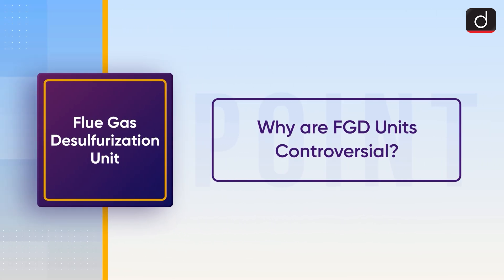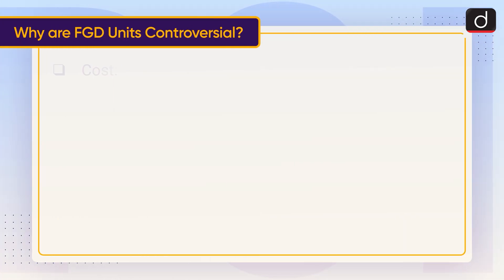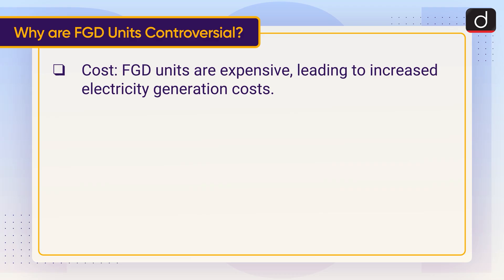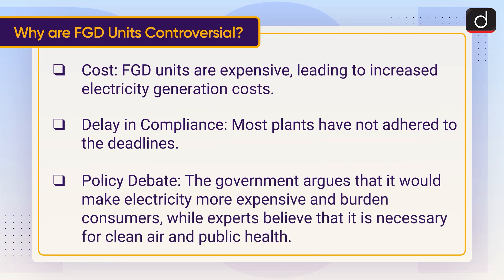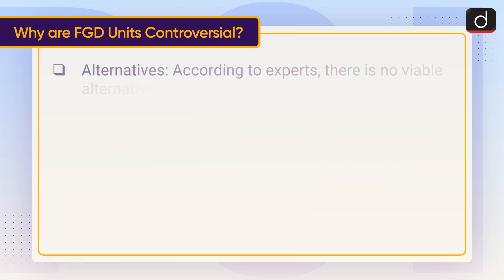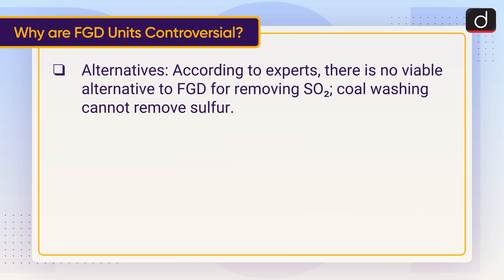FGD units are controversial for several reasons. First, cost: FGD units are expensive, leading to increased electricity generation costs. Second, delay in compliance: most plants have not adhered to the deadlines. Third, policy debate: the government argues FGD would make electricity more expensive and burden consumers, while experts believe it is necessary for clean air and public health. On alternatives, experts maintain there is no viable alternative to FGD for removing SO2, as coal washing cannot remove sulfur.